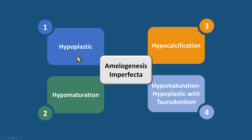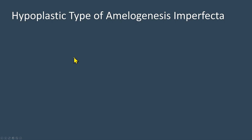Since the hypoplastic type is the most common, let's discuss it in this video. The hypoplastic type of amelogenesis imperfecta may have the following features.